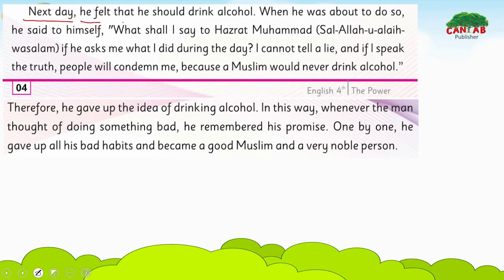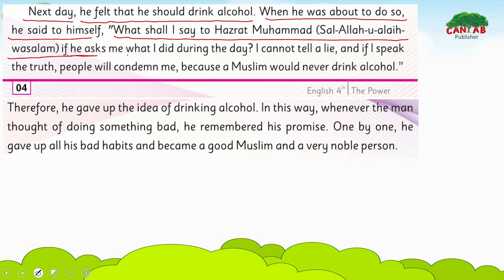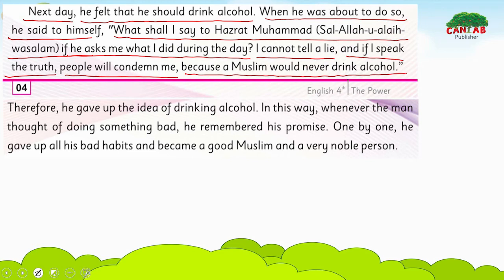The next day, the man felt like drinking alcohol. When he was about to do so, he said to himself: what shall I say to Hazrat Muhammad (S.A.W.) if he asks me what I did during the day? He could not tell a lie, and if he spoke the truth, people would condemn him because a Muslim would never drink alcohol. So by truthfulness, two evils were vanished: number one is theft, and number two is drinking alcohol.